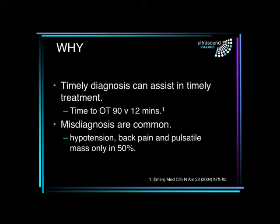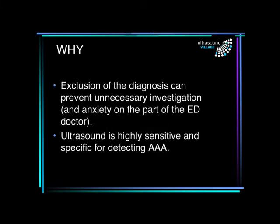Further, we know that misdiagnosis is quite common. The classic triad of hypotension, back pain and a pulsatile mass only occurs in 50% of these patients. If we can exclude the diagnosis then we can prevent unnecessary investigation and drop our anxiety level for the treating doctor quite considerably. We know that ultrasound is highly sensitive and specific for detecting abdominal aortic aneurysm.